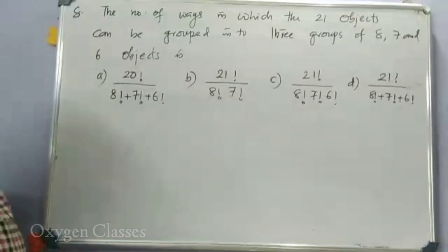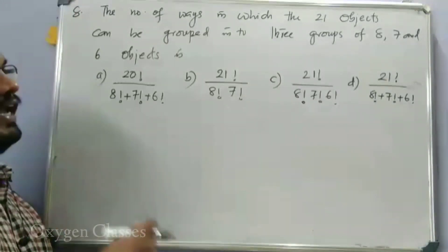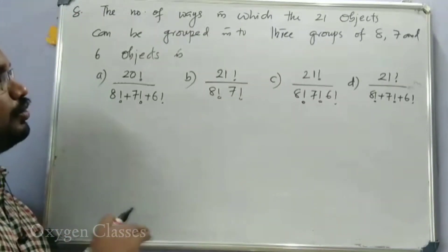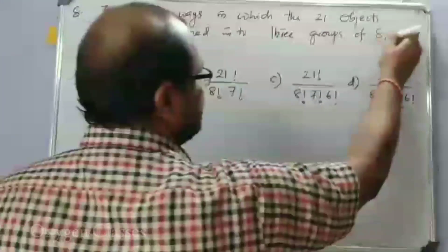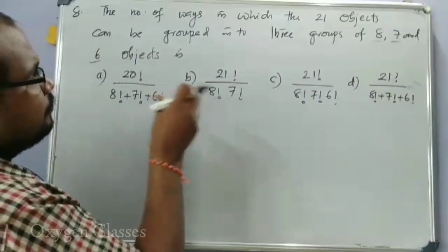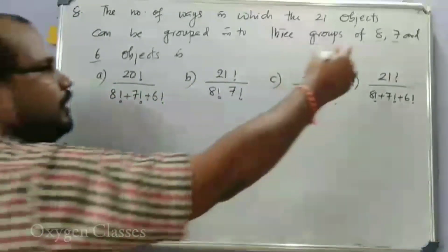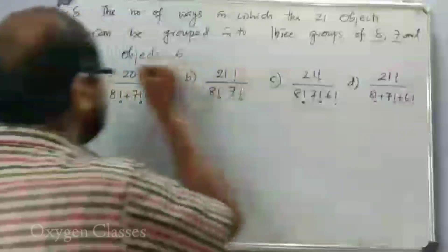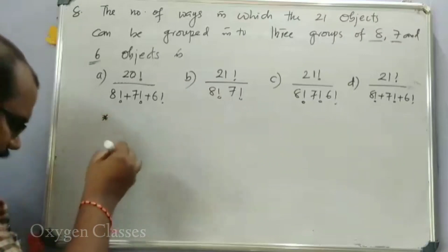Next: The number of ways in which 21 objects can be grouped into 3 groups of 8, 7, and 6 objects. The formula for this is not immediately obvious, so we will derive it.